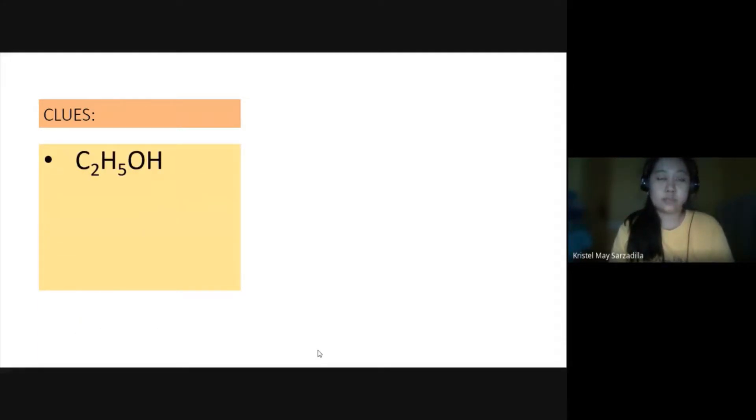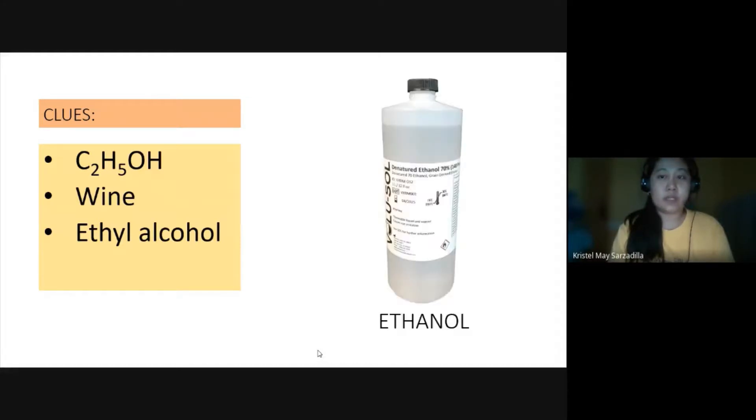C2H5OH. Your next clue, wine. And chemical name, ethyl alcohol. Your answer, it's ethanol. Wine and ethyl alcohol. Well, ethyl alcohol or ethanol is a by-product of the fermentation of wine.